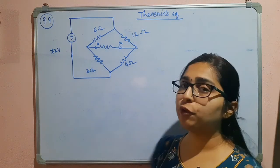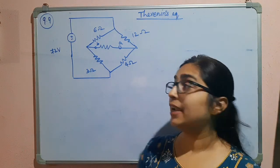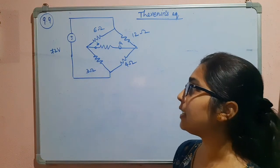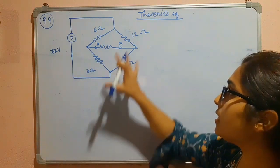In this example we have to find the Thevenin's equivalent. So here we can see there is only one independent source, that is 72 volt voltage source. This is the bridge network.